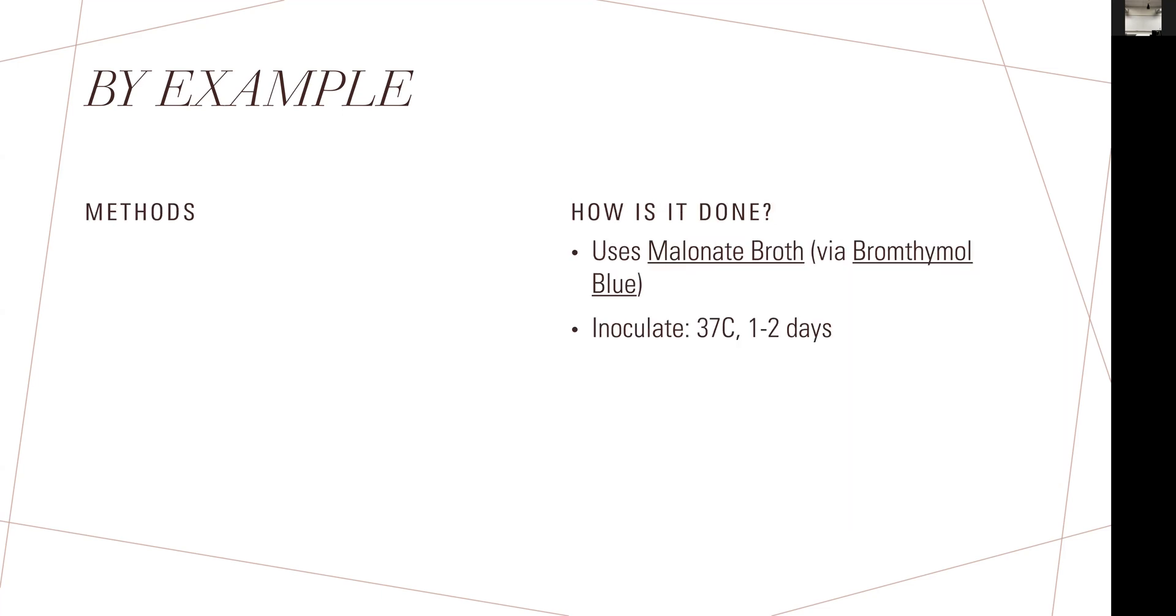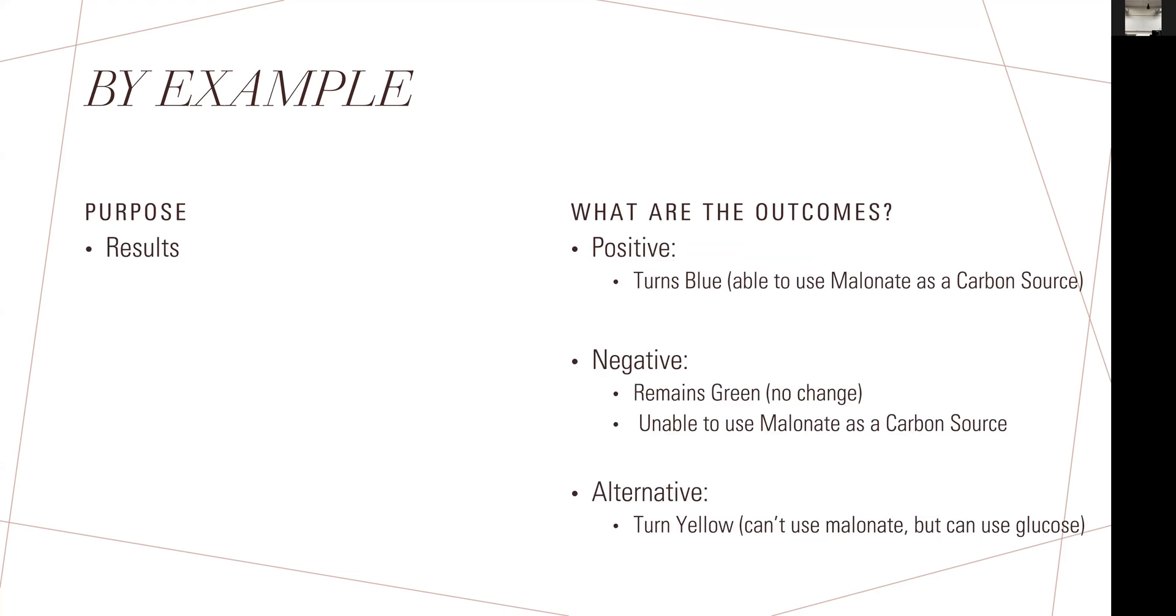Now you explain the methods. It's quite simple for this test. This test uses a key medium, a key ingredient known as malonate broth. The way that malonate broth works is by using a very specific indicator known as bromthymol blue. The other key step involved is that you need to grow this at human temperature, 37 degrees Celsius or 98.6 degrees Fahrenheit, for about 24 to 48 hours. Those are all the key things you need: the medium with the indicator and the steps to observe the results.